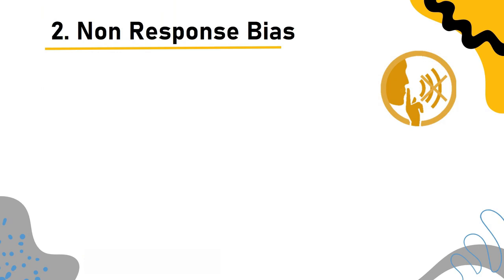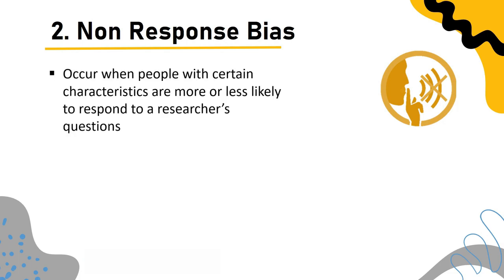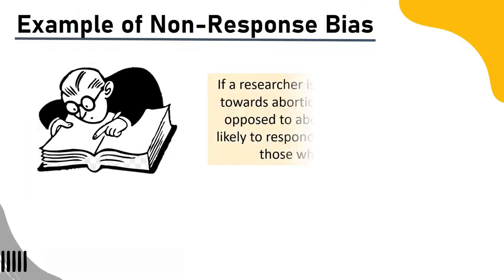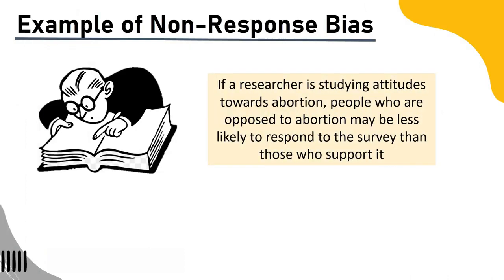Non-response bias: Another common cause of sampling bias is non-response bias, which occurs when people with certain characteristics are more or less likely to respond to a researcher's questions. Example: If a researcher is studying attitudes towards abortion, people who are opposed to abortion may be less likely to respond to the survey than those who support it.